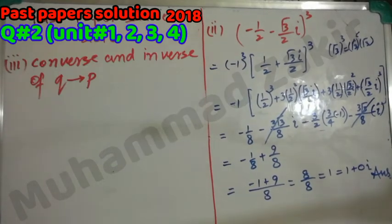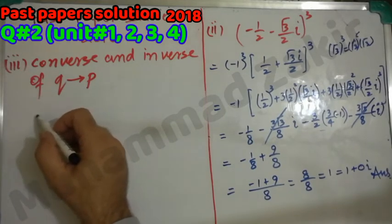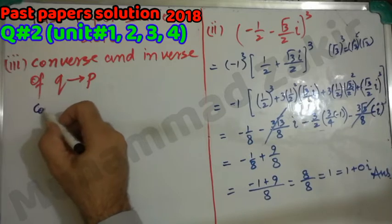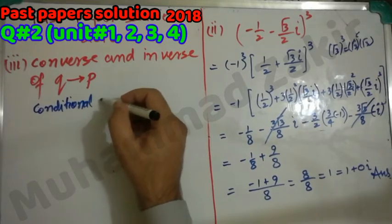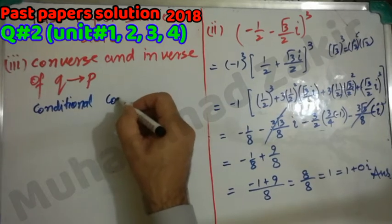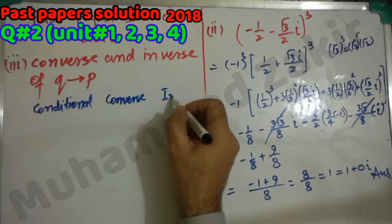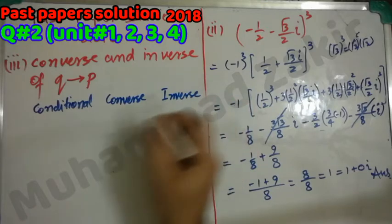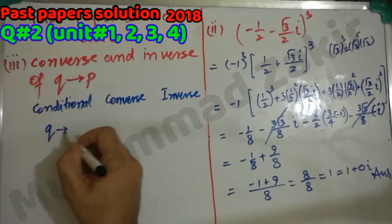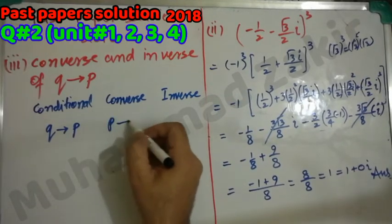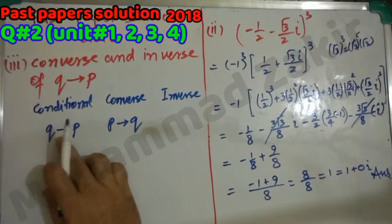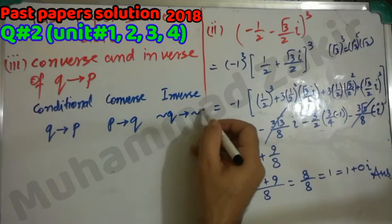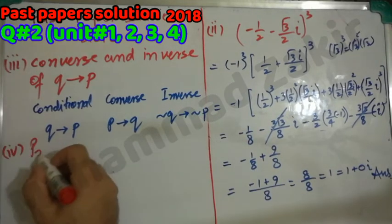Converse and inverse of (q implies p): the given conditional is q implies p. The converse is p implies q. The inverse is found by applying 'not' to both sides: not q implies not p.